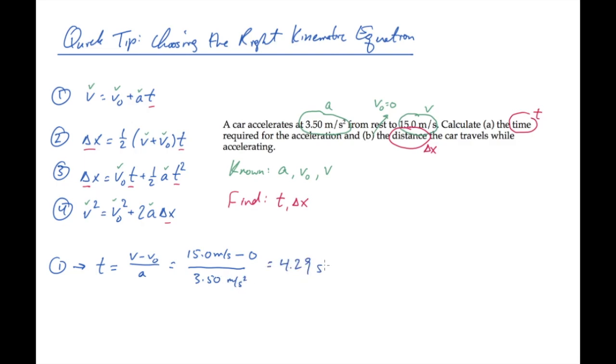So we can count t as a known now, add it to the list, scratch it off of those we're trying to find, and check off the time in all of our equations. Now we need to find the distance, delta x, that the car travels.